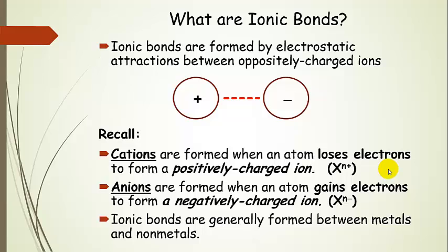Basically, they are electrostatic attractions that form between oppositely charged ions. So if we have a positive ion and a negative ion, then those two are attracted to each other through electrostatic attractions.